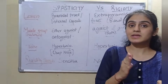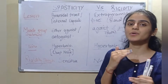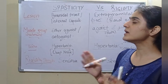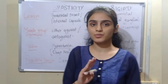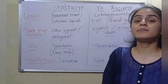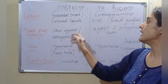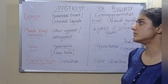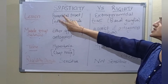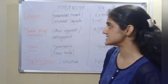If we talk about the differences, in spasticity our muscle tone increases, and in rigidity our muscle tone also increases — so how do we differentiate between them? Starting with lesion: in spasticity, there is involvement of the pyramidal tracts or the internal capsule. If there is a lesion in these two regions, then our patient will report spasticity.